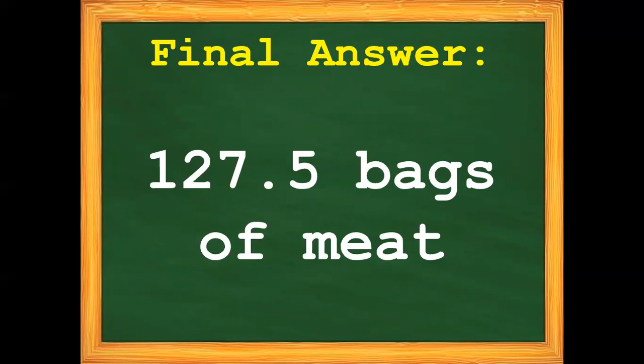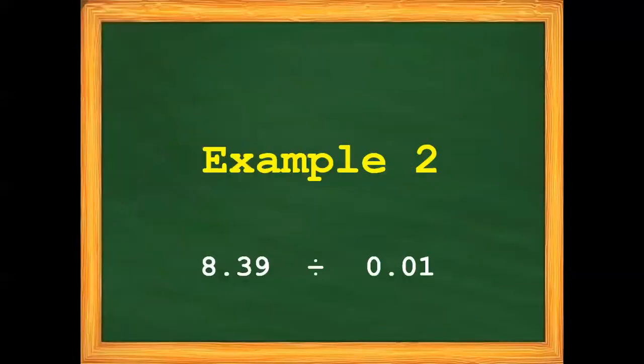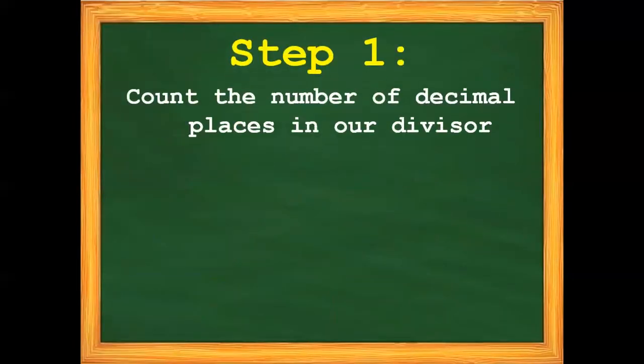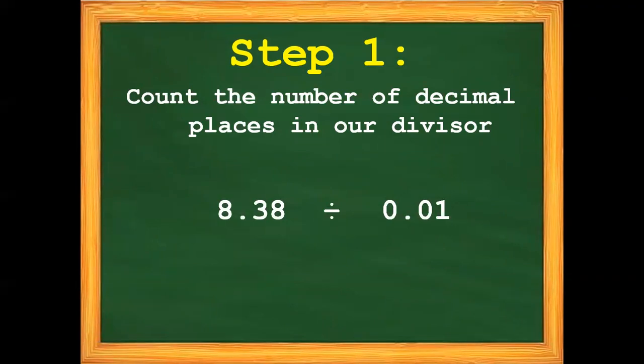Let us now proceed with our second example: eight-and-thirty-nine-hundredths divided by one-hundredth. Step number one: count the number of decimal places in our divisor. What is our divisor here? It is one-hundredth. And how many decimal places do we have in one-hundredth? We have two decimal places.